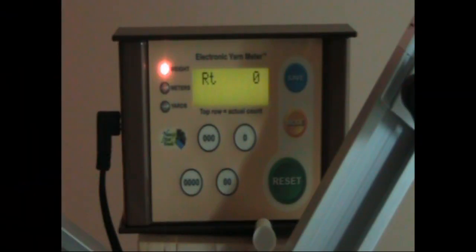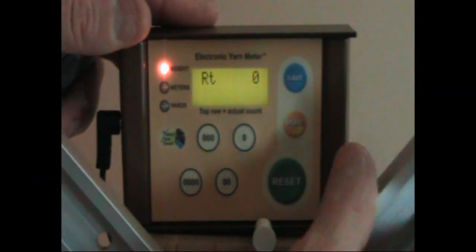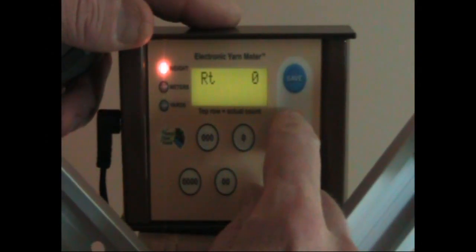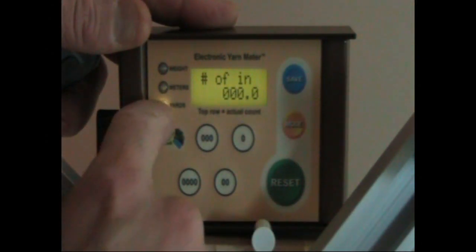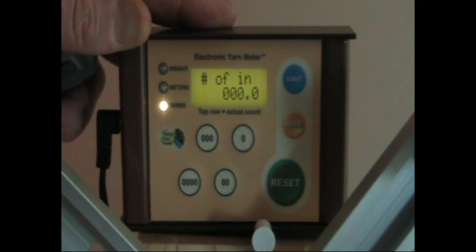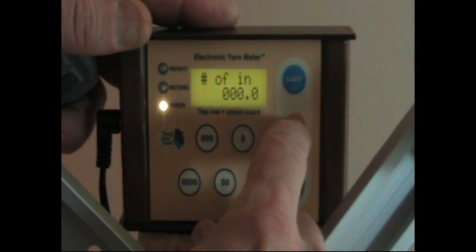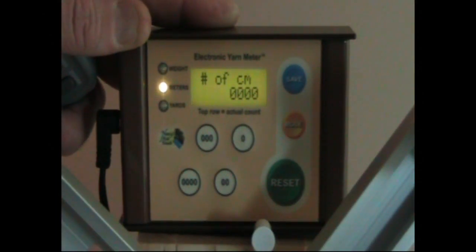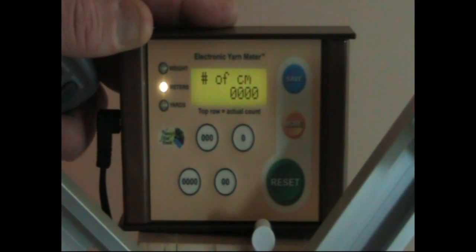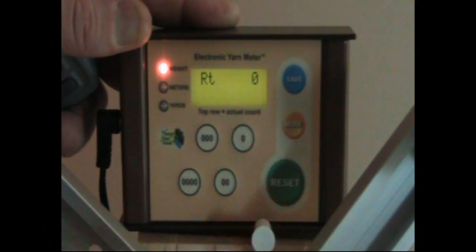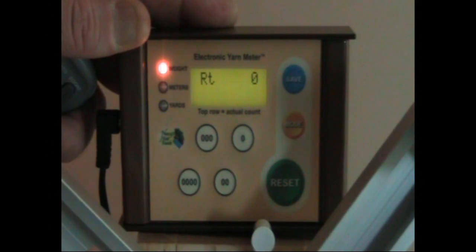So in review, I'll show you the menuing system. We start out with rotations, RT. As I go around, I'm going to switch to yards. You see the yardage indicator light up and the number of inches wanting us to enter the number of inches for every rotation. I can then go to the metric system and enter the number of centimeters if I'd rather do meters. And when I hit it again, I go back to rotation.